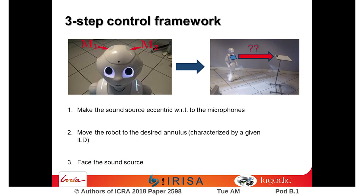To solve our initial problem, we build a three-step control framework. First, we ensure that the sound source is eccentric by generating a motion with a desired ILD so that dissimilar sound levels are measured on the microphones. In the second step, we generate a motion from a desired ILD implying a narrower annulus than the current one. Eventually, we face the sound source by setting the desired ILD so that the same sound level can be measured on both microphones.